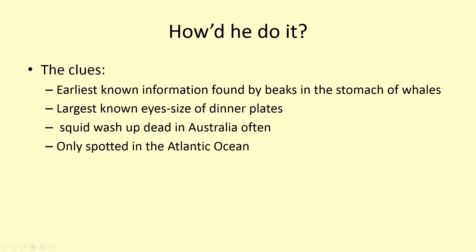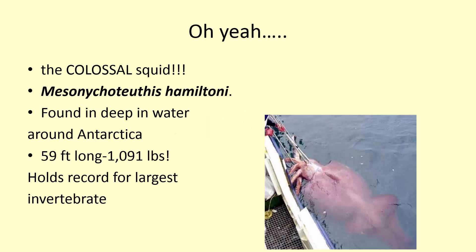How did he find them? He looked at clues — the earliest known information were the beaks found in the stomachs of whales. Back in the early 1900s, whaling was hugely popular, almost to the brink of extinction. Giant squid have the largest known eye sizes of any cephalopod, which can be as large as dinner plates. Dead representatives would wash up in Australia regularly, and one was even spotted in the Atlantic Ocean. He got into a submersible and started to film. Later, they found an even bigger species called the colossal squid.